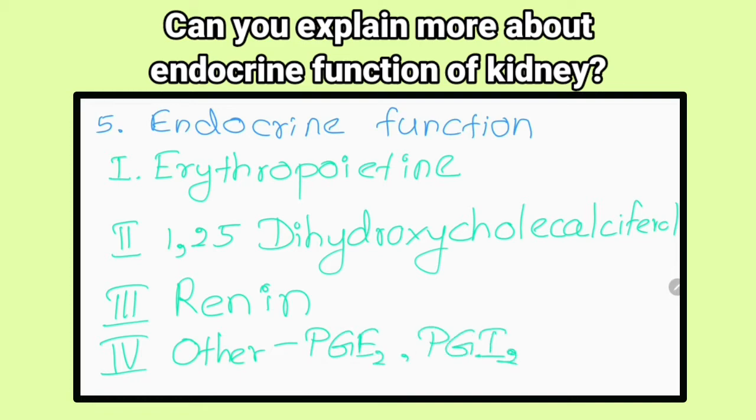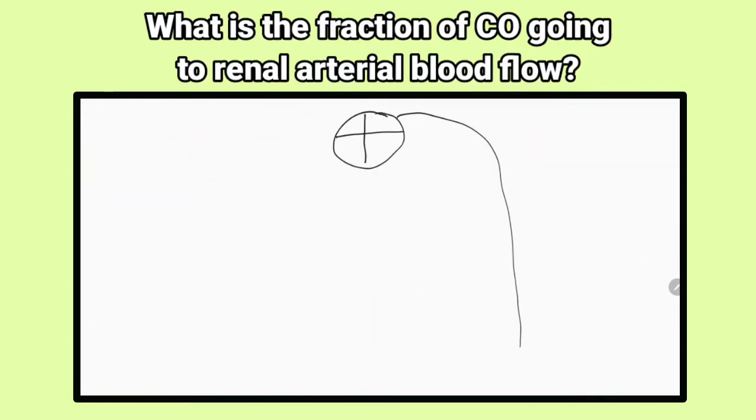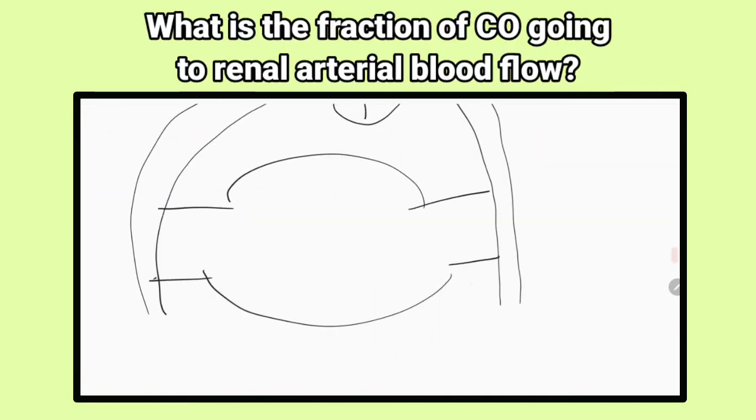It contributes to long-term regulation of blood pressure by regulating fluid balance and secreting renin. What is the fraction of cardiac output going to renal arterial blood flow? 20%.